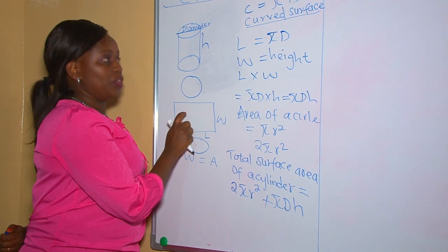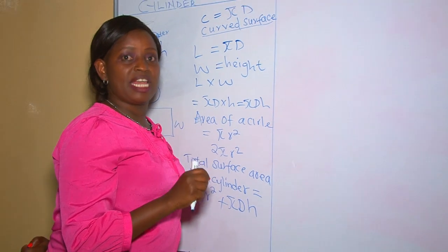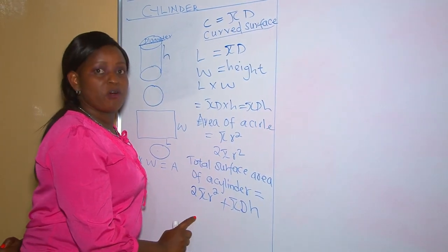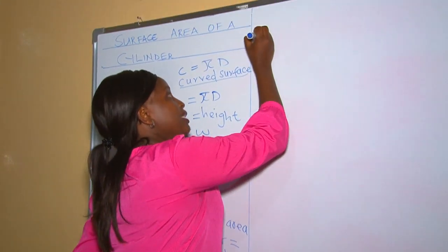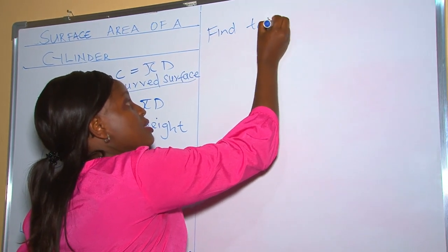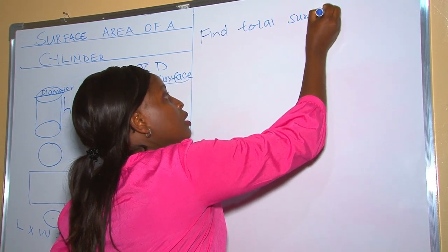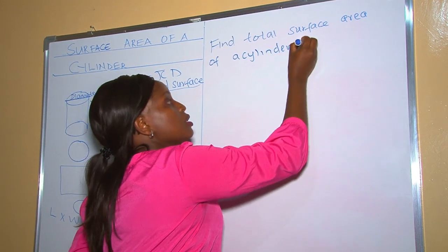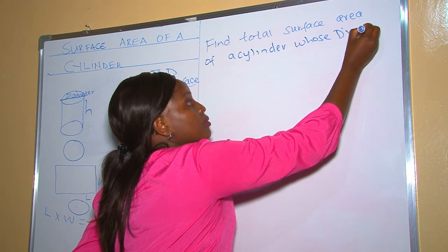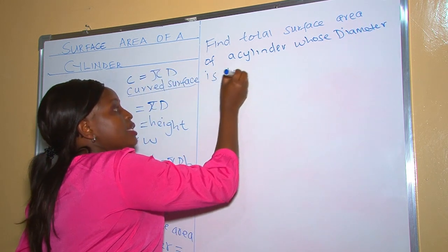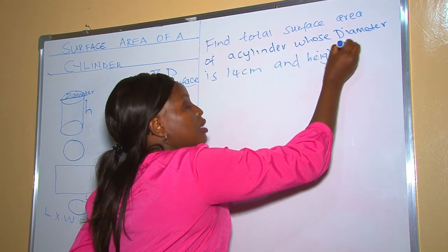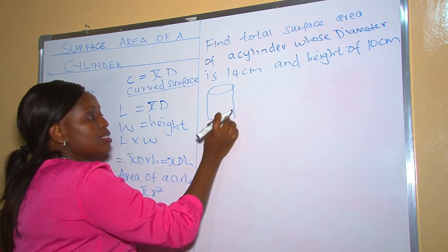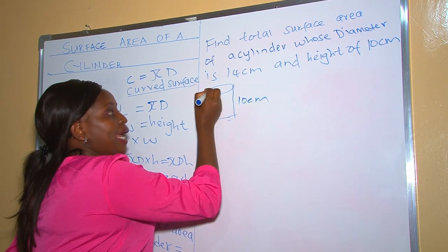For example, find the total surface area of a cylinder whose diameter is 14 centimeters and a height of 10 centimeters. When I draw the cylinder, it has a height of 10 centimeters and a diameter of 14 centimeters.